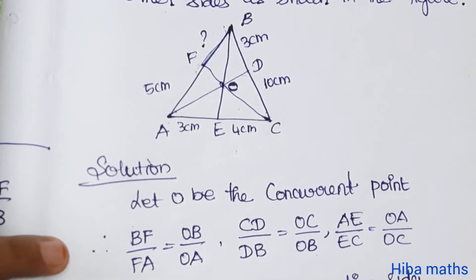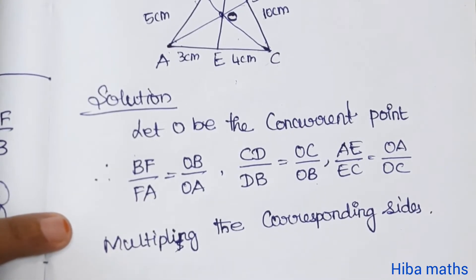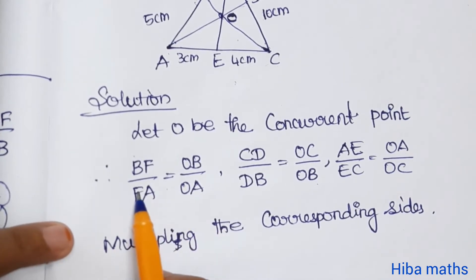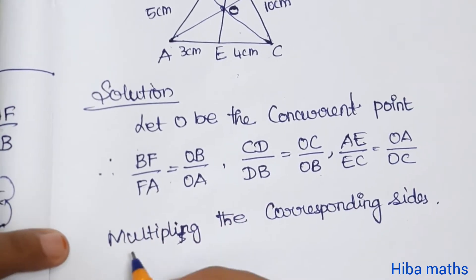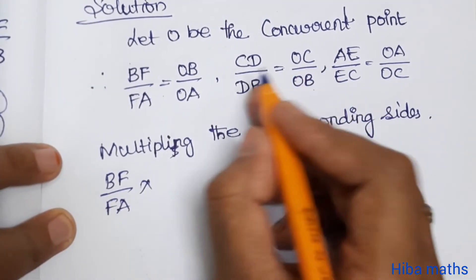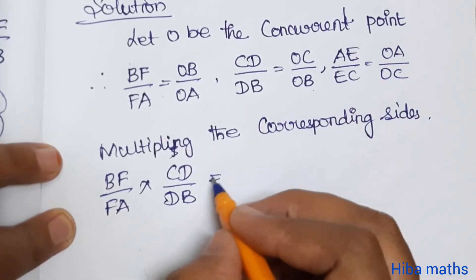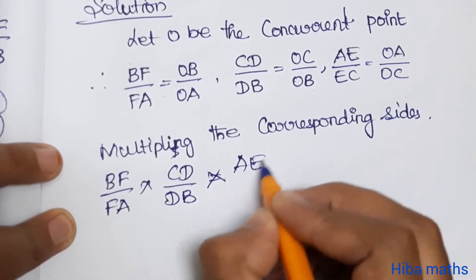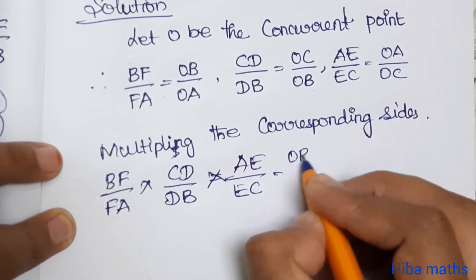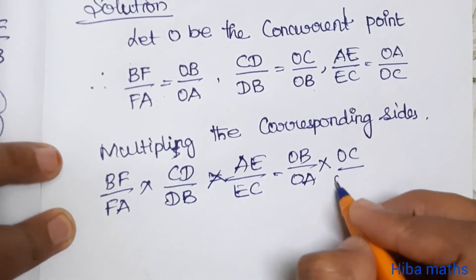Now multiplying the corresponding sides, we get: BF by FA times CD by DB times AE by EC is equal to OB by OA into OC by OB into OA by OC.